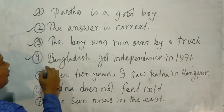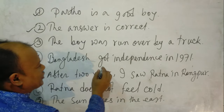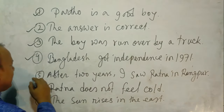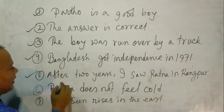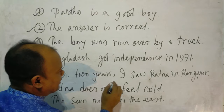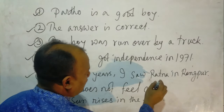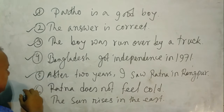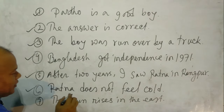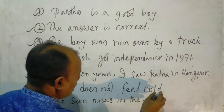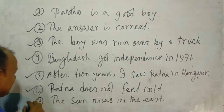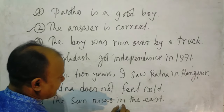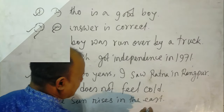Number 4: Bangladesh got independence in 1971. Number 5: After 2 years, I saw Ratna in Rangpur. Number 6: Ratna does not feel cold. Number 7: The sun rises in the east.